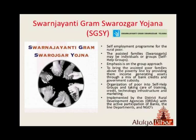Next is Swarna Janti Gram Swarojgaar Yojana. As the name indicates, it is a self-employment program started for poor people mainly living in rural areas. In this scheme, the assisted families may be individuals or groups who are self-employed. The main objective is to bring poor people above the poverty line by providing income-generating assets through a mix of bank credit and government subsidies — meaning loans are given to poor people at very low interest rates. This scheme is implemented by district rural development agencies with the active participation of banks and NGOs.